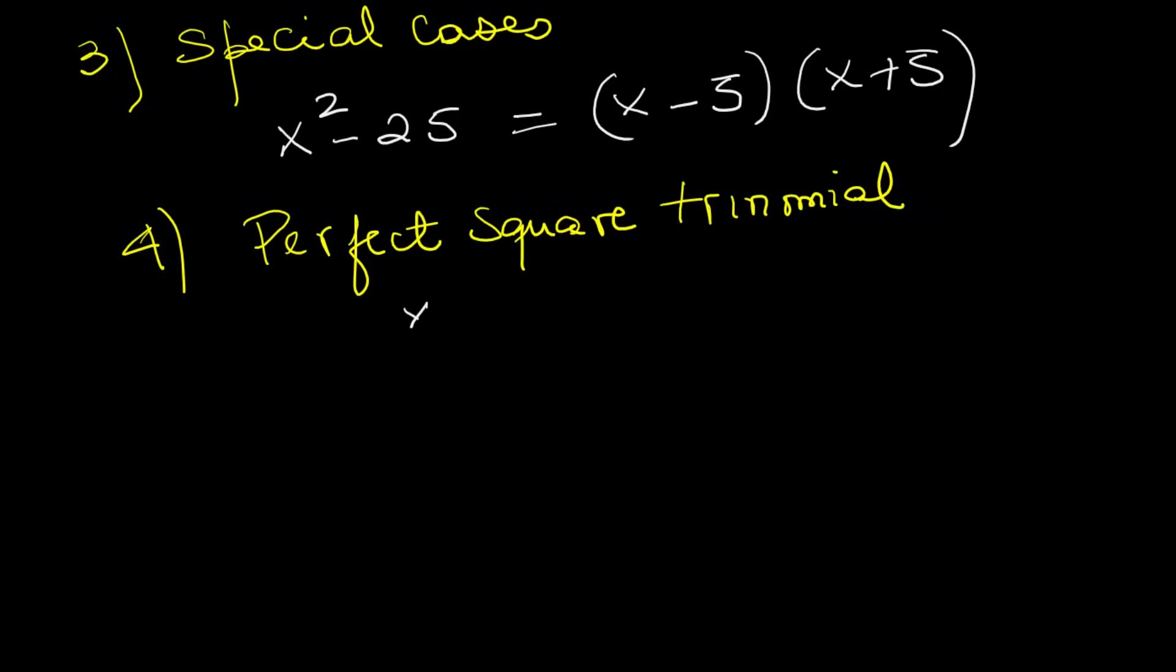Next, the perfect square trinomial. For example, x squared plus 10x plus 25. Notice the last term is 5 squared and the middle is 2 times 5 times x. That means it factors into x plus 5 squared.